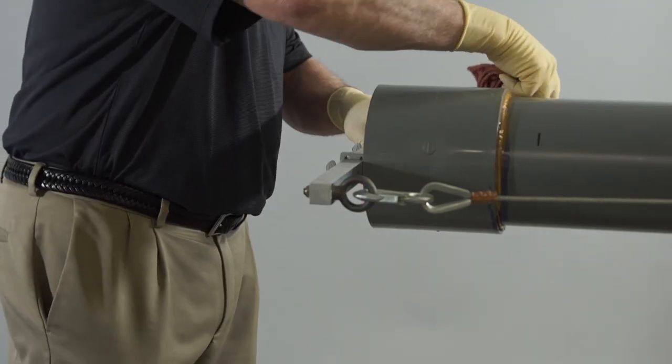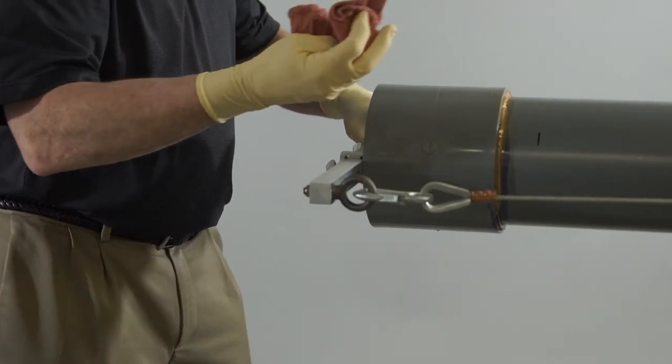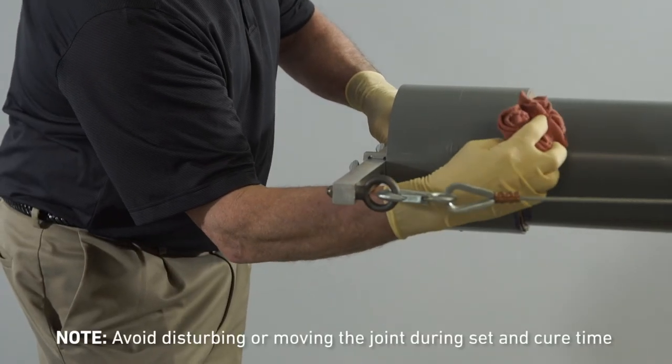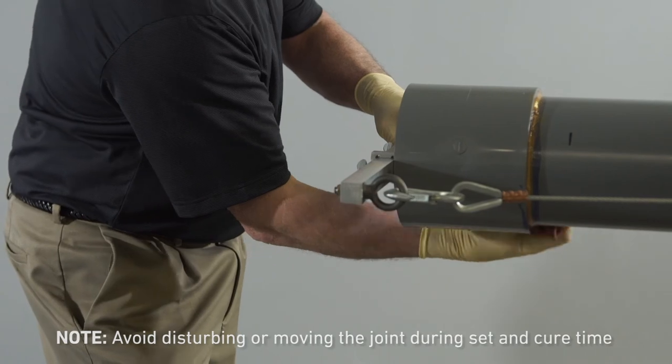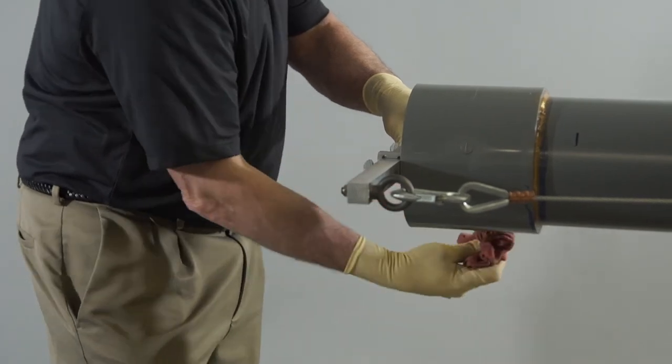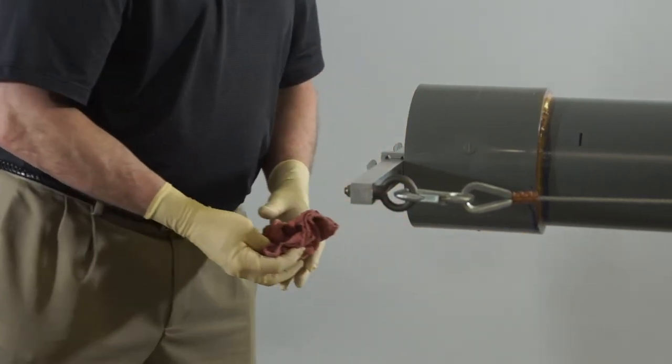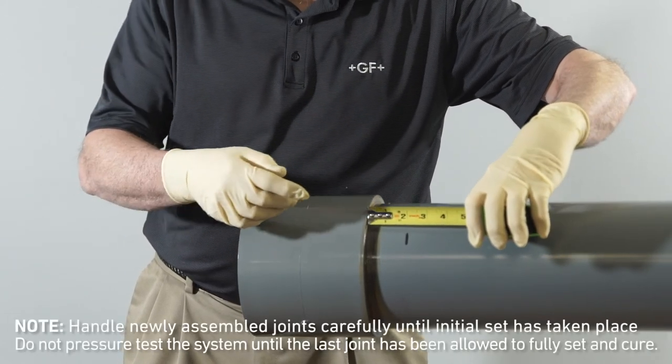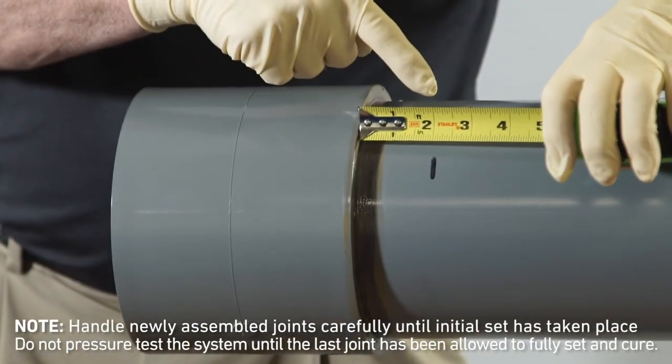Using a clean dry rag, remove the excess solvent cement from the pipe and fitting, including the ring or bead around the socket entrance. Excess solvent cement does not strengthen the joint. To ensure the pipe is fully inserted into the fitting socket, measure the distance between the second mark on the pipe and the lip of the fitting. The measurement should be 2 inches.